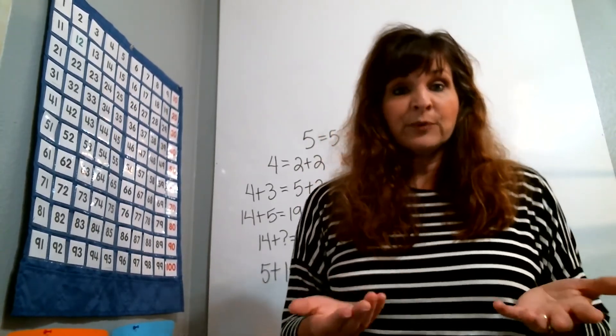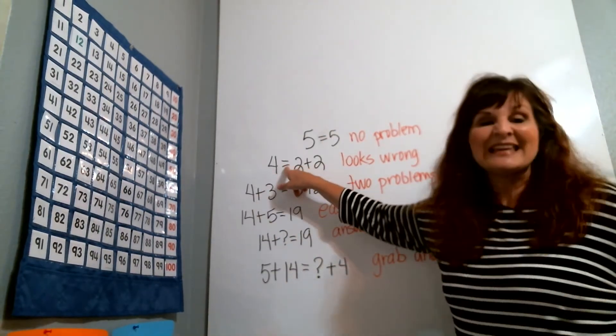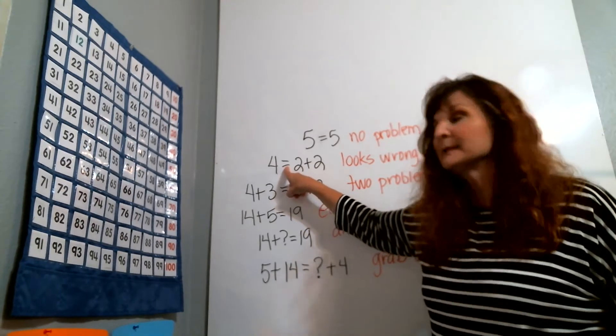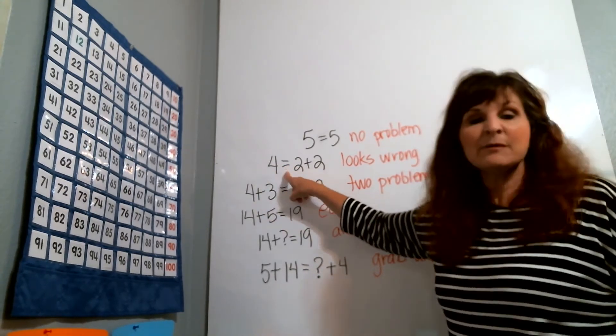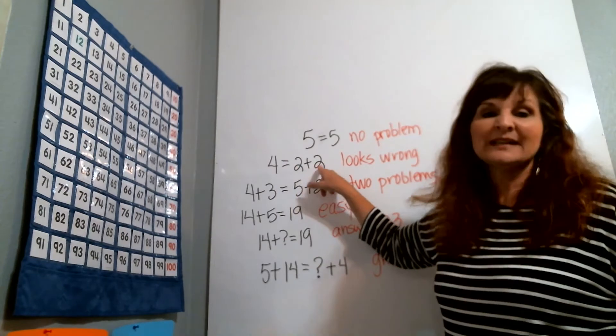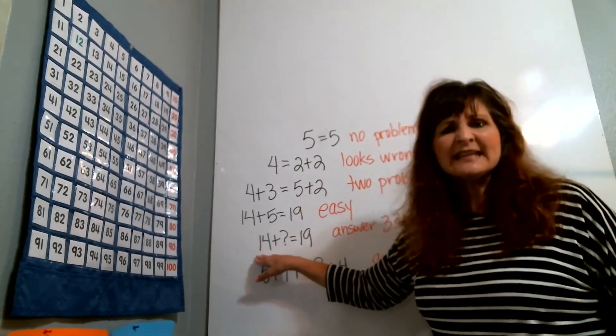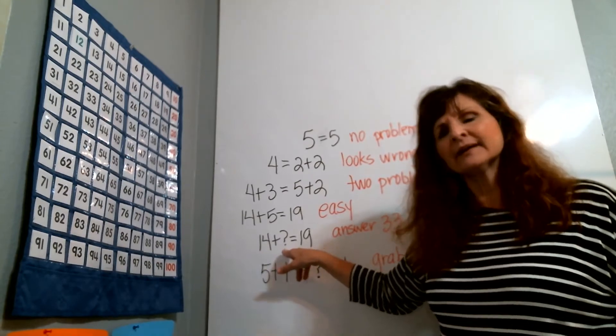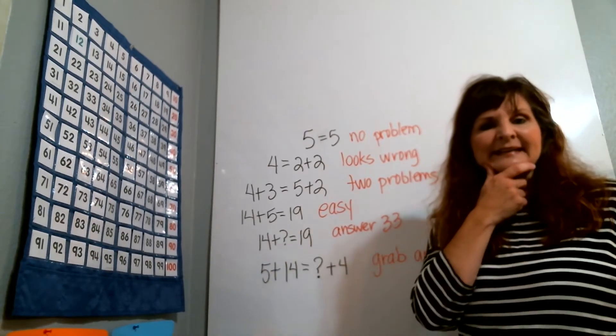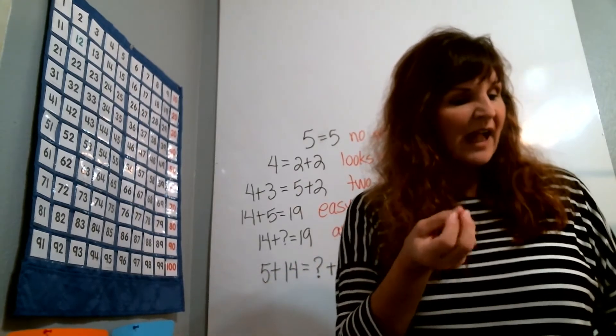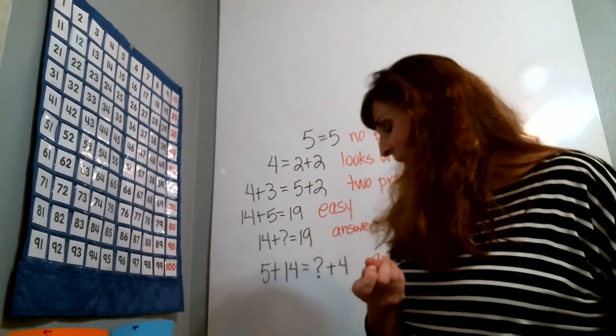For instance, when you have a problem like this one, instead of equals you can say has the same value as, 4 has the same value as 2 plus 2. Or on this one, you can say 14 and some number have the value of 19. And that helps kids to see that that equal sign has that meaning of has the value of or has the same value as.